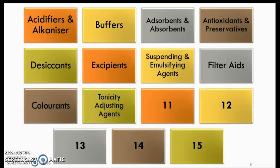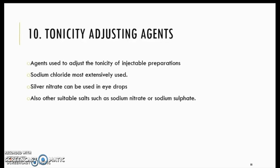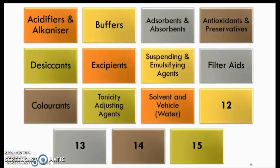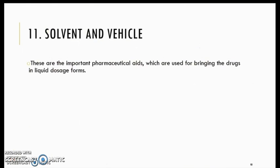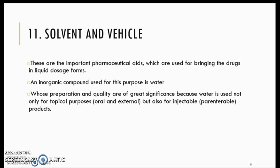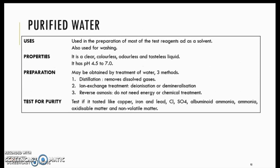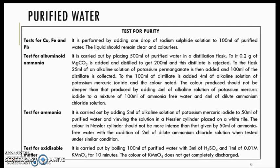Next is tonicity adjusting agents. This agent ensures that the tonicity of the drug is suitable for administration. Tonicity is a measure of osmotic gradient, ensuring that the drug can be absorbed or transported via osmosis. Next is solvent and vehicle — the most important substance used in most liquid dosage forms is water, which has its own category. The monograph of purified water is provided, and there are many purity tests that need to be done on it.